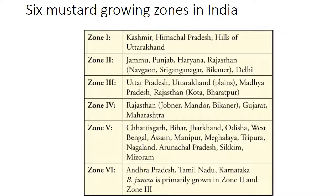According to agro-climatic conditions, India is divided into six mustard growing zones. Zone 1 consists of Kashmir, Himachal Pradesh, and hills of Uttarakhand. Zone 2 belongs to Jammu, Punjab, Haryana, Rajasthan, and Delhi. Zone 3 contains Uttar Pradesh, Uttarakhand plains, Madhya Pradesh, and Rajasthan including Kota and Bharatpur area. Zone 4 includes Rajasthan — Jodhpur, Nagaur, Mandor, Bikaner — then Gujarat and Maharashtra. Zone 5 includes Jharkhand, Bihar, Odisha, West Bengal, Assam, Manipur, Meghalaya, Tripura, Nagaland, Arunachal Pradesh, Sikkim, and Mizoram. Zone 6 includes Andhra Pradesh, Tamil Nadu, and Karnataka.